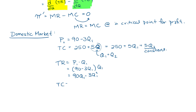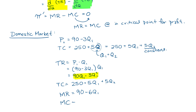Total cost equals 250 plus 5Q1 plus 5Q2, treating Q2 like a constant. Taking the marginal revenue as the derivative of total revenue gives 90 minus 6Q1. Taking marginal cost as the derivative of total cost: the derivative of 250 is 0, the derivative of 5Q2 is 0 (treated as constant), so MC equals 5.